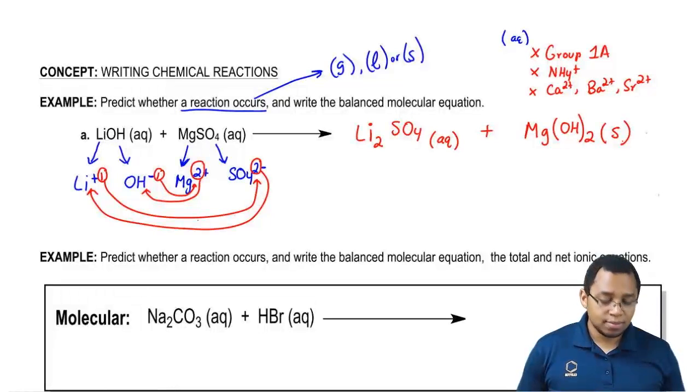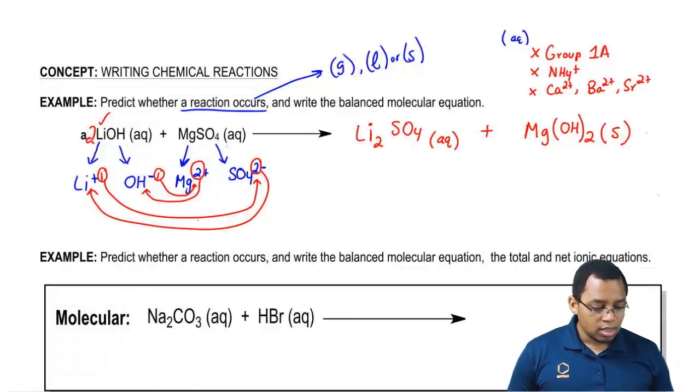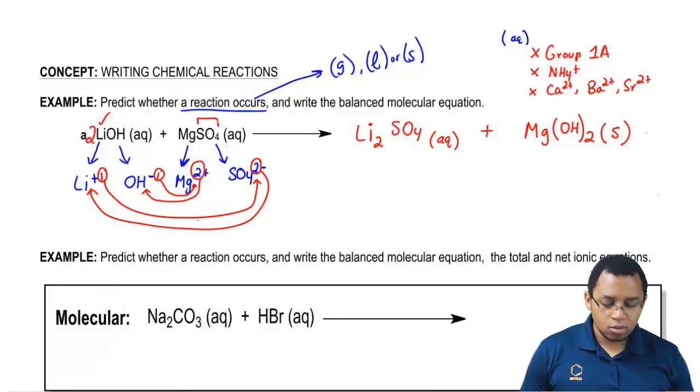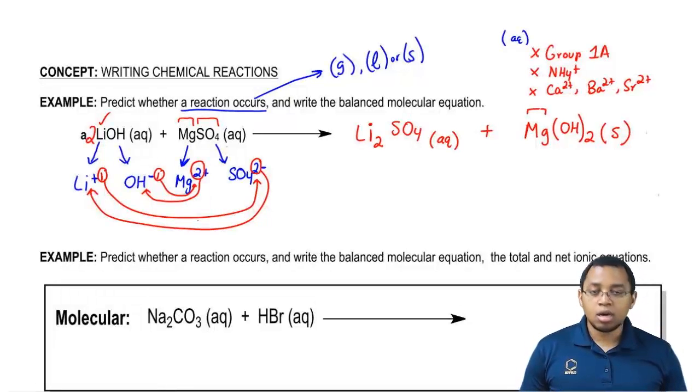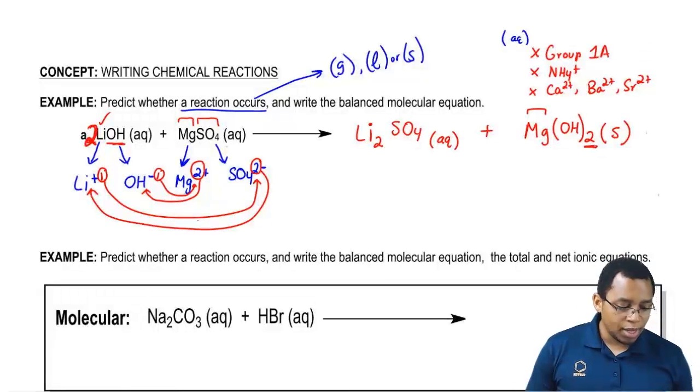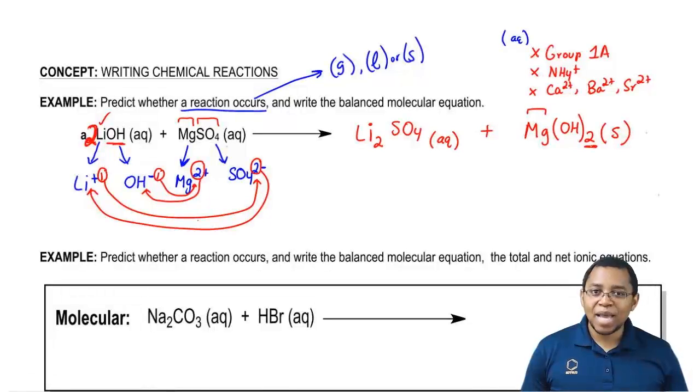Now we have to balance it. On the left side we have one lithium, and on the right side we have two, so we're going to throw a two here. On the left side we have one sulfate, one SO4, and on the right we have one sulfate, so we're good there. On the left we have one magnesium and we have one magnesium. Then on the left we have, this 2 gets distributed to the OH also, so now we have two OHs, just like we have two OHs here. Our equation is now balanced.